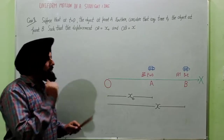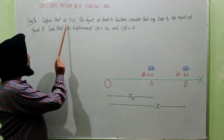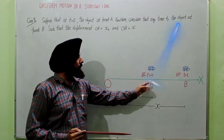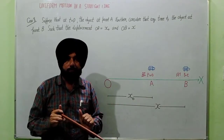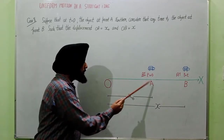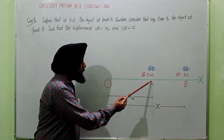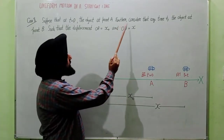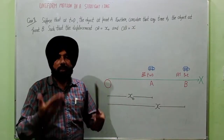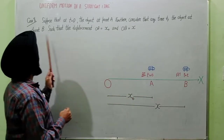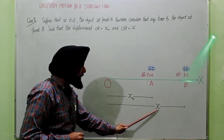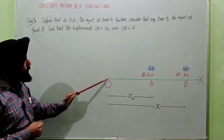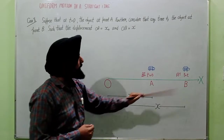Now in the second case, suppose that at time 0 the object is at point A — not at the origin. When the time is 0, the object is present at point A, and the displacement from origin to A is X-not. Further, at any time t, the object is at point B at a displacement X from the origin, such that O to A is X-not and O to B is X.